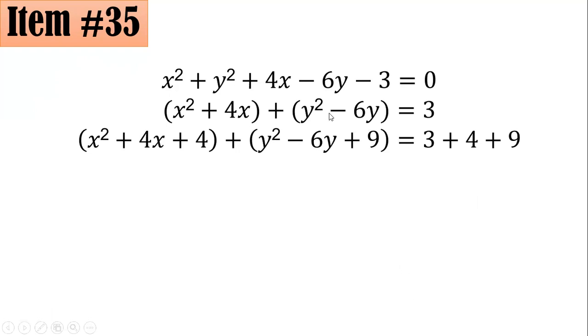On the second one, -6 divided by 2 is -3, then you square it, that will give you plus 9. I added 4 and 9 on the left, I should also add 4 and 9 on the right. This can be factored as (x + 2)² + (y - 3)² = 3 + 4 + 9, or 16.